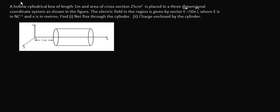A hollow cylindrical box of length 1 meter and area of cross-section 25 cm² is placed in a 3-dimensional coordinate system as shown in the figure. The electric field in the region is given by E = 50x î, where E is in Newton per coulomb and x is in meters. Find the net flux through the cylinder and the charge enclosed by the cylinder.